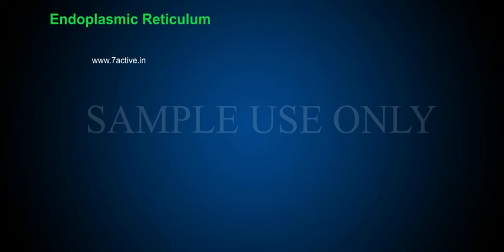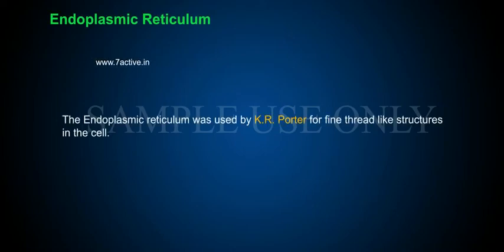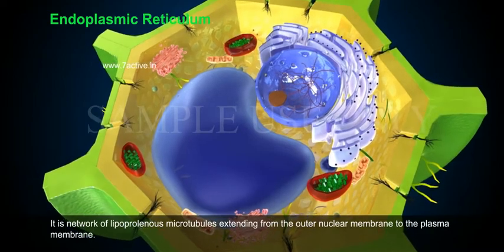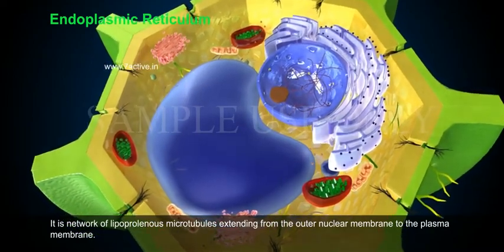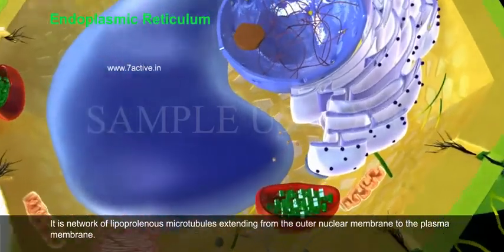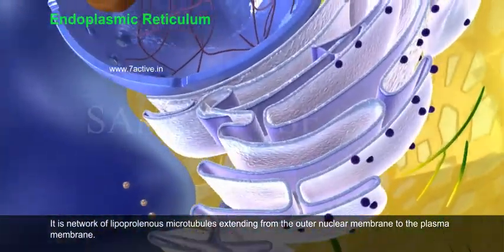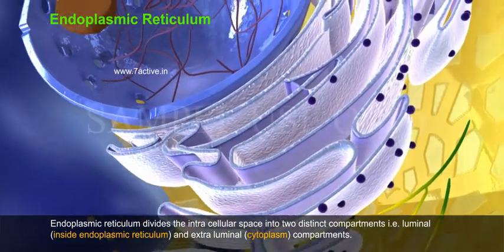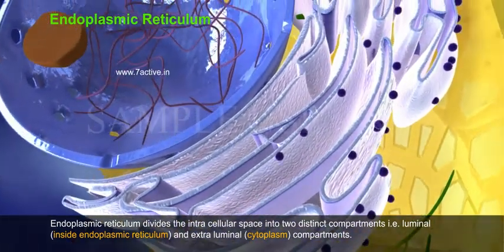Endoplasmic Reticulum. The endoplasmic reticulum was named by K.R. Porter for fine thread-like structures in the cell. It is a network of lipoprotein microtubules extending from the outer nuclear membrane to the plasma membrane. Endoplasmic reticulum divides the intracellular space into two distinct compartments.